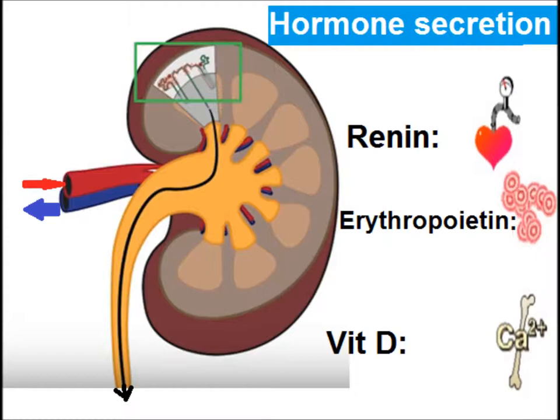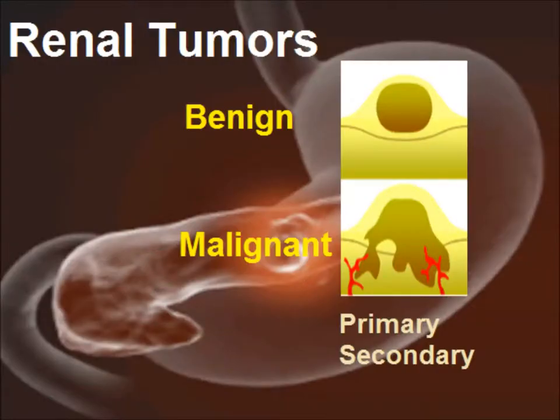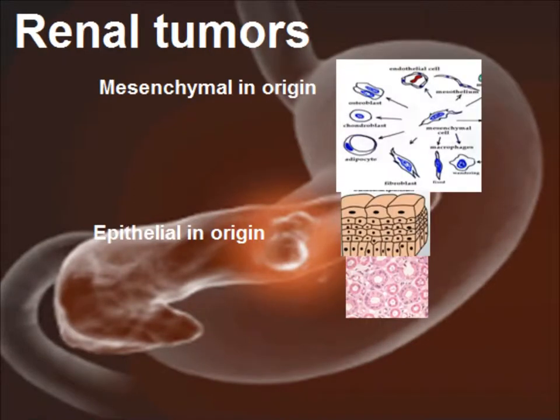Renal tumors can present with paraneoplastic syndrome. Renal tumors can be benign and malignant, and malignant tumors may be primary and secondary. The kidney is the site for primary tumors, and according to the type of tissue they can be mesenchymal in origin or epithelial in origin.